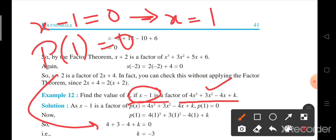Now, place the value of 1: 4 into 1³ equals 4, plus 3 into 1² equals 3, minus 4 into 1 equals 4, plus k is equal to 0. After solving this we will get k is equal to minus 3. So, with the help of this factor theorem we are able to get the value of k.